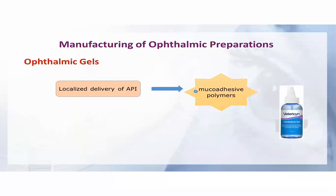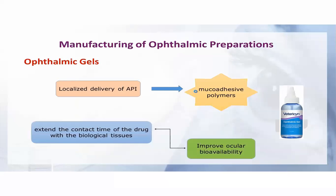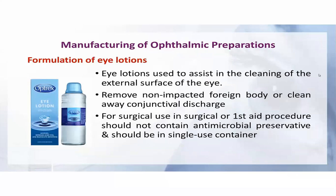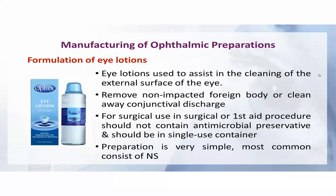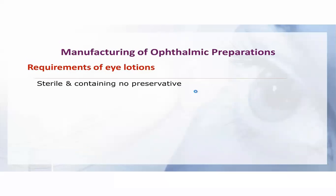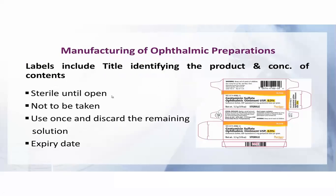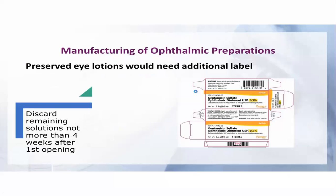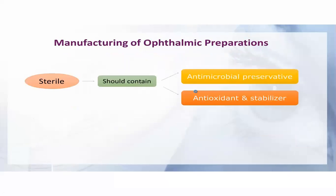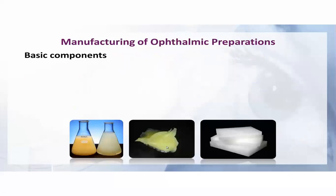To increase prolonged contact time with the conjunctiva, different formulations are needed. Ophthalmic gels provide the most prolonged contact time, followed by suspensions, then solutions. These formulations improve bioavailability. Eye lotions are simple and easy to prepare, and gel formulations are also used. Labeling instructions related to ophthalmic products require that they be sterile and free from particulate matter.